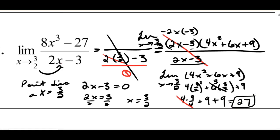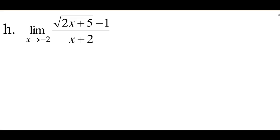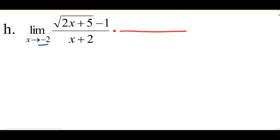For H, first thing I want to do is check: can I use direct substitution in the denominator? I evaluate my function at the value X is approaching — negative 2 plus 2 gives me 0. That means I need to do something. I don't have anything to factor, but I do have a radical to rationalize. So I'm going to multiply the top and bottom by the conjugate, which changes the form but not the value.